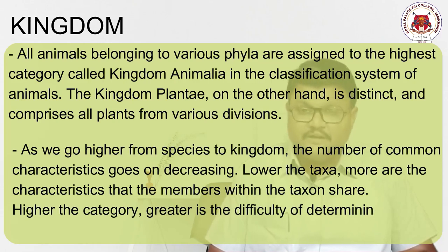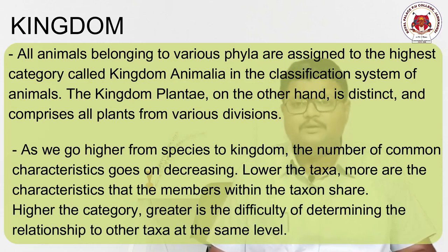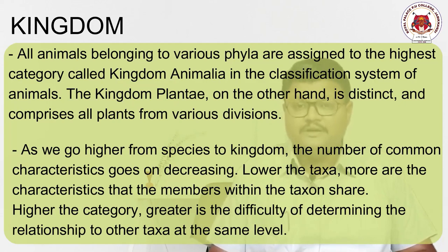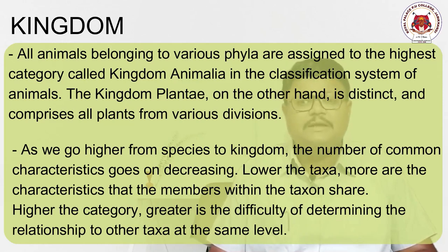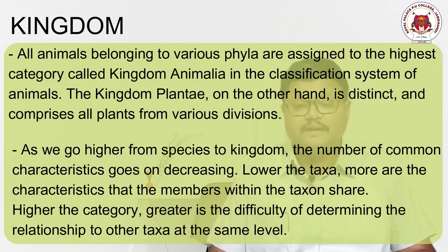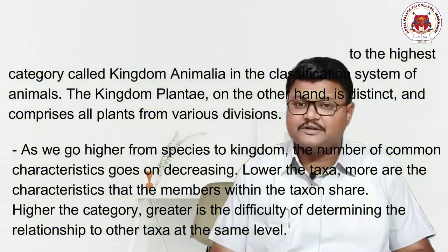Kingdom is the topmost category, including all different phyla. It contains the highest number of organisms and the lowest number of common characteristics. Kingdom tells us which broad section an organism belongs to — for example, a cow belongs to Kingdom Animalia, and a potato belongs to Kingdom Plantae. I hope you are getting all these points with respect to NCERT explanations.